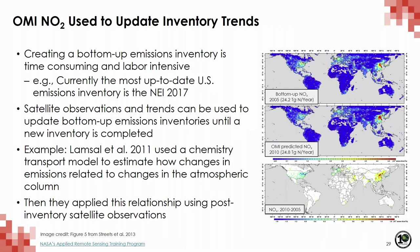Satellites can also be used to provide timely information to update bottom-up emissions inventories until a new inventory is completed. Creating a bottom-up emissions inventory is a major undertaking — currently, the most up-to-date U.S. emissions inventory is the NEI 2017. An example is a Lamsal et al. 2011 study, where they first used a three-dimensional chemistry transport model to estimate how changes in emissions relate to changes in the model atmosphere column, then used this relationship to predict changes in the observed atmosphere column. Using this technique, they could estimate trends in emissions past the latest inventory date.